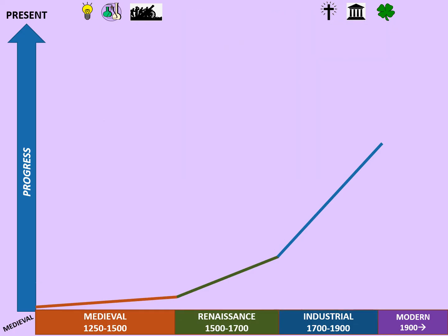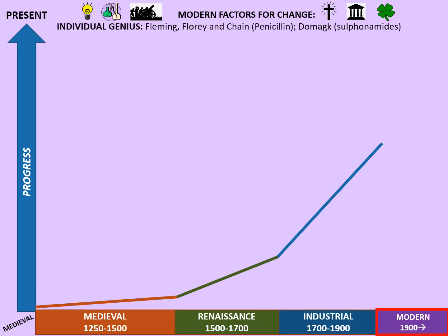On to our last period — the modern period from 1900 through to the present day. Our modern factors for change start with individual genius again: loads of these, including Alexander Fleming, Florey, and Chain, who all helped develop penicillin, and Domagk with sulfonamides, among more.